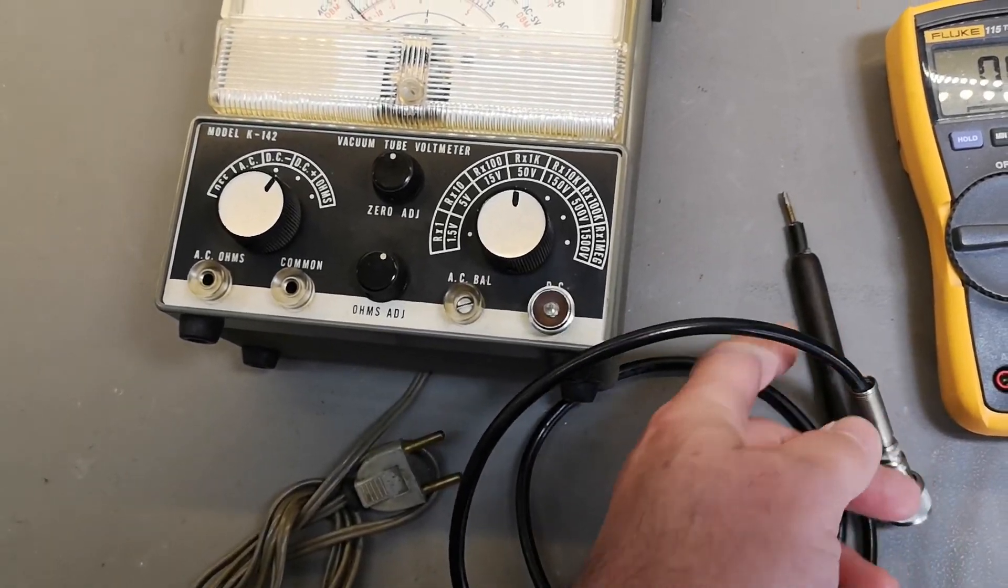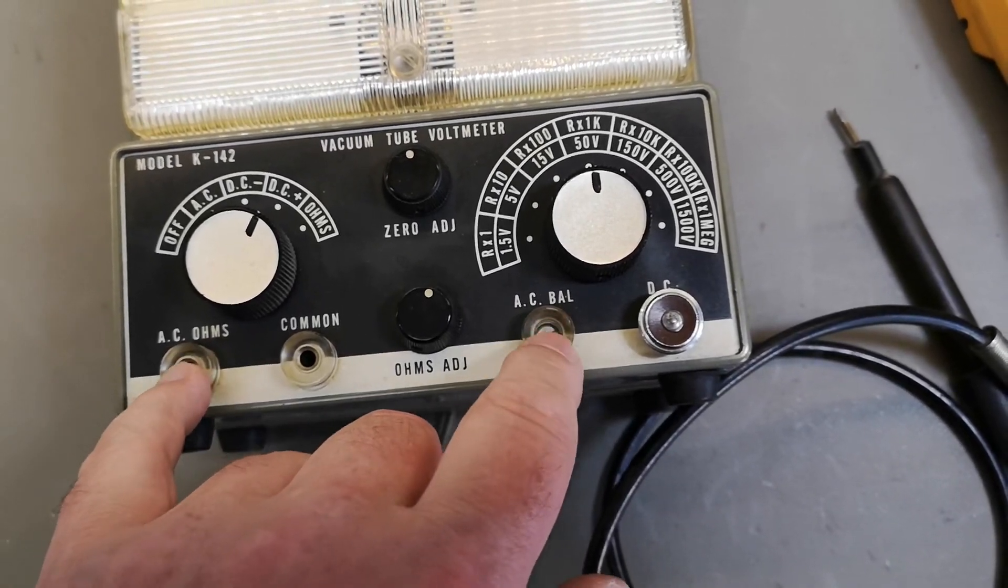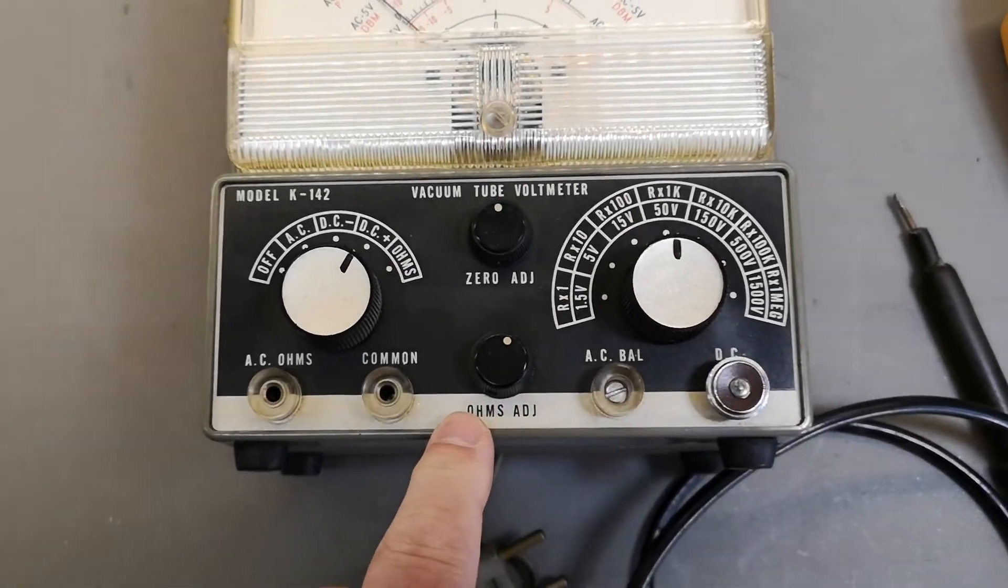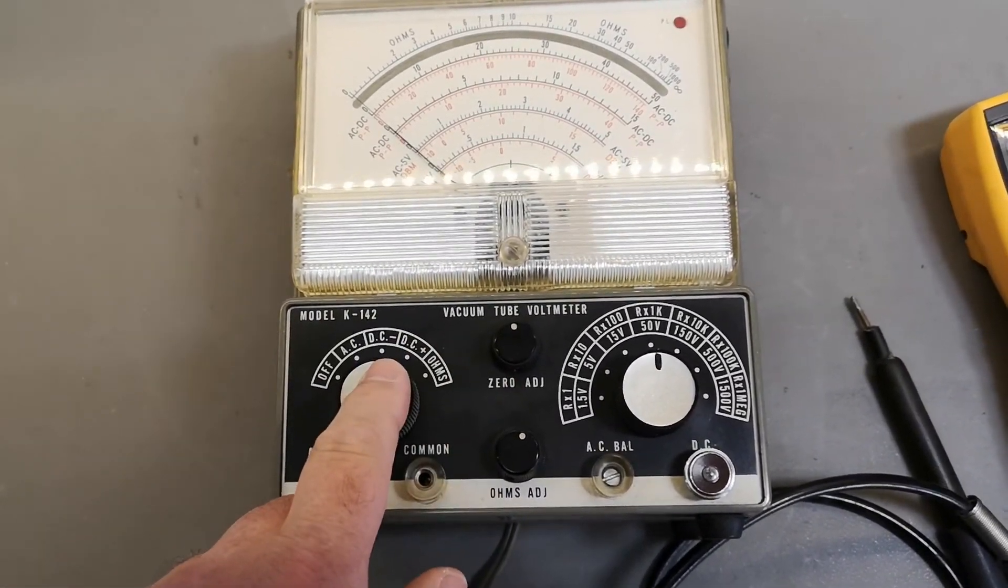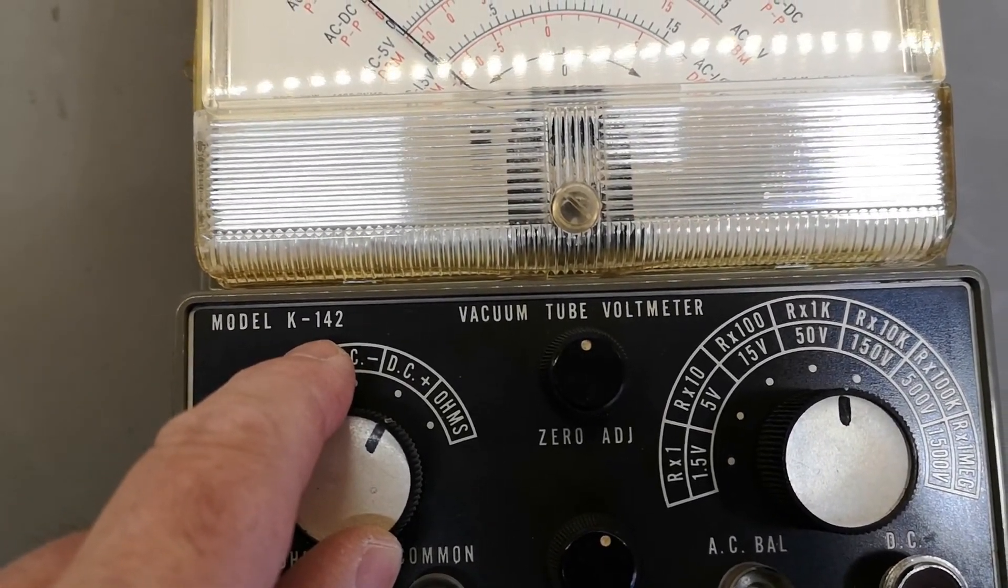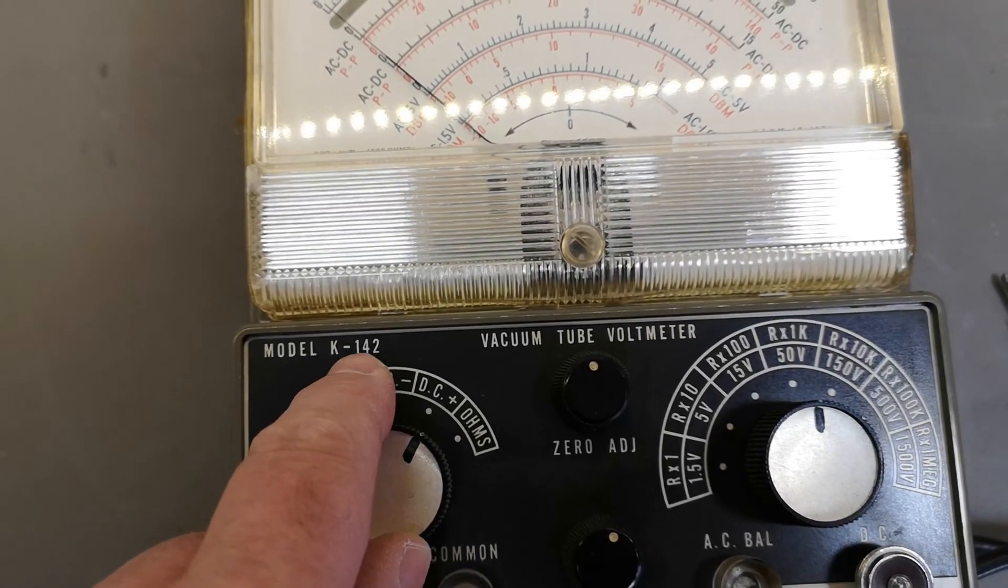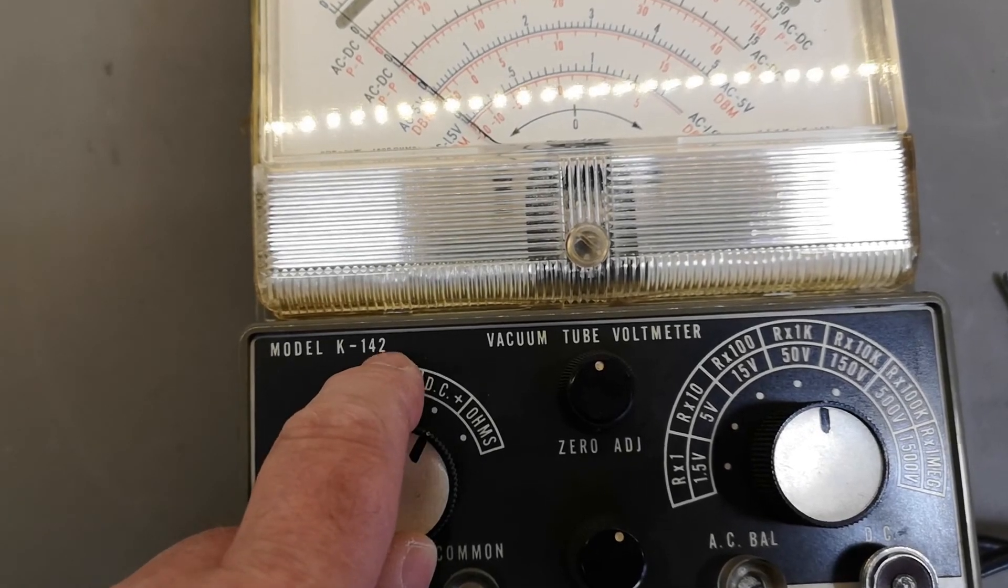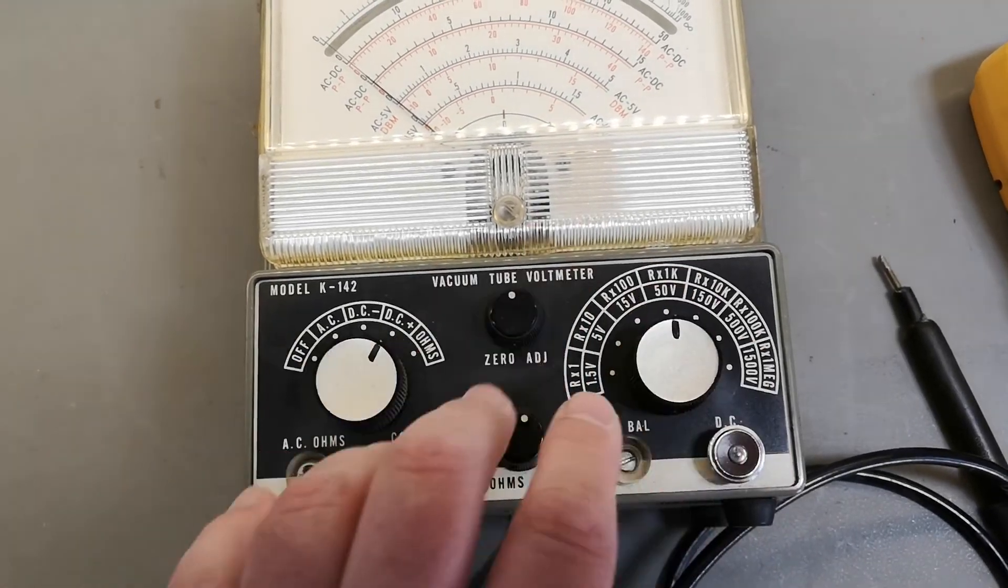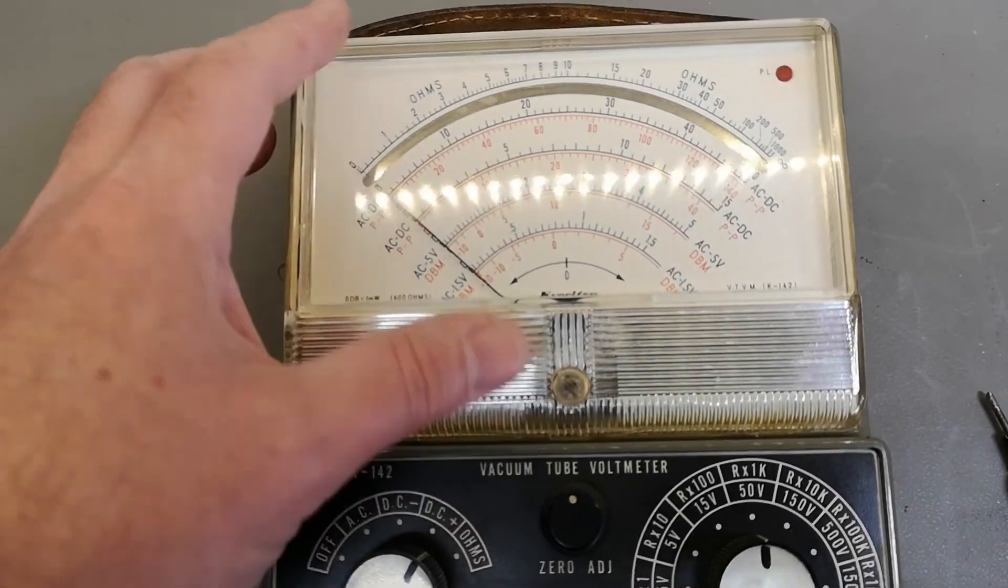There's a trimmer here for AC balance when you're measuring AC volts. This is model K-142, and I found out there's also a K-1420 with a zero. It looks very much like this with small and minor changes on the front and a little bit of changes on the meter itself.